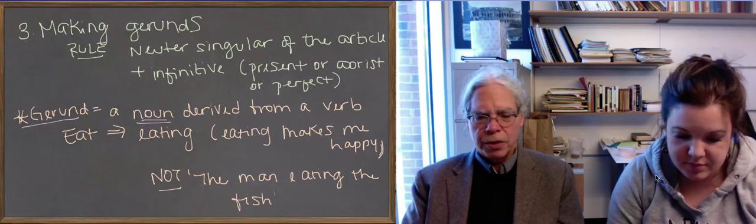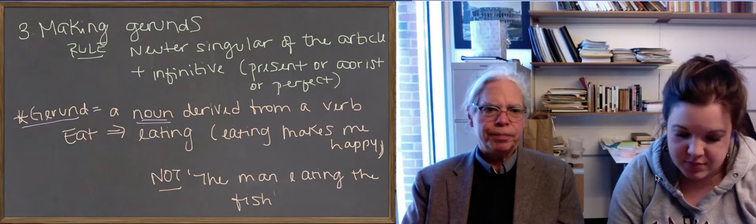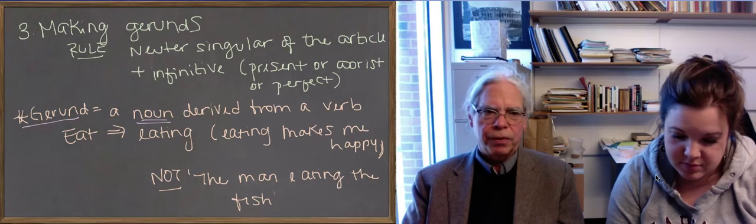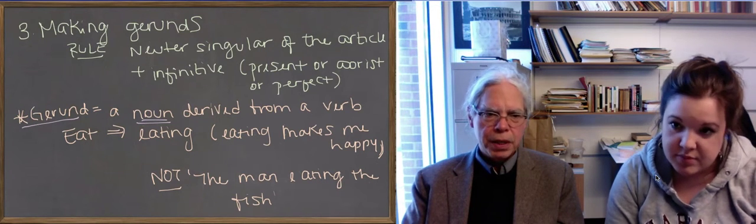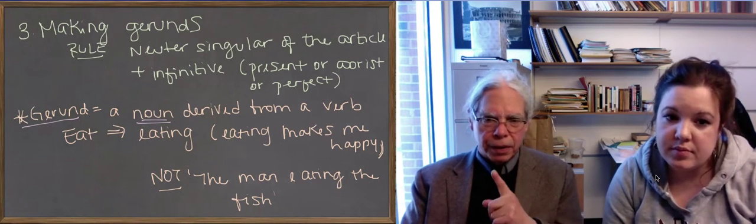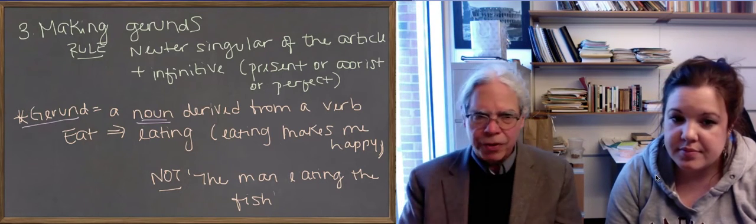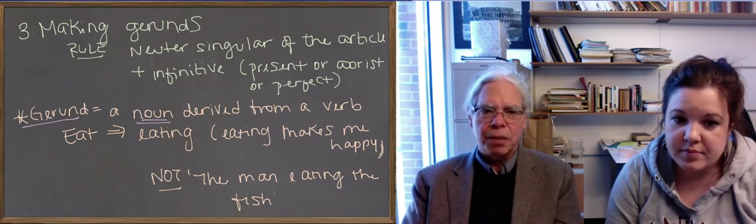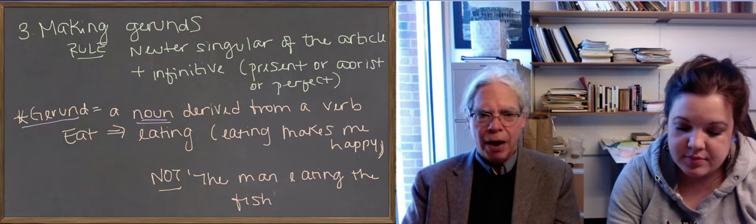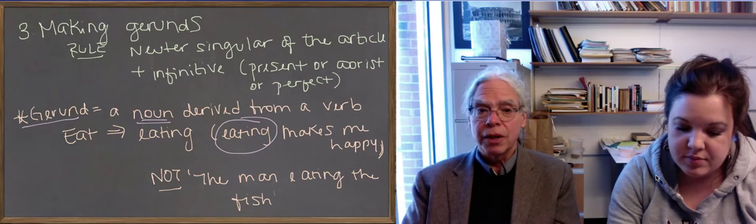So in English, gerunds end in ing. So the gerund derived from the verb eat is eating. But there are two eatings in English. One is a gerund, as in the sentence, eating makes me happy. That's a noun, that's the subject of the sentence.